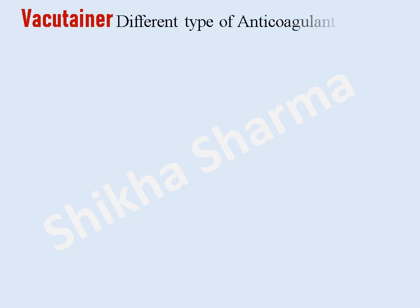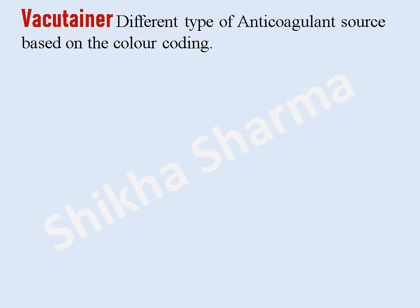Blood is collected in vacutainers at the time of post-mortem examination. Different vacutainers are used to isolate plasma and serum from the blood to perform a wide variety of tests. The vacutainers have a colored rubber stopper or cap at one end, which is a kind of code for different types of sampling.